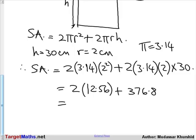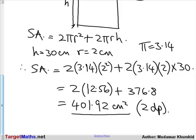And getting a final total of 401.92 cm squared, and this is 2 decimal places. That is, then, the surface area of the cylinder given.